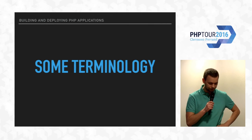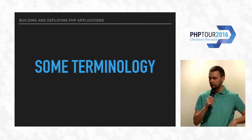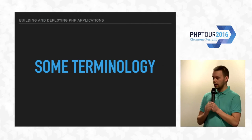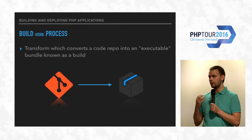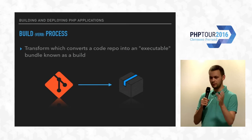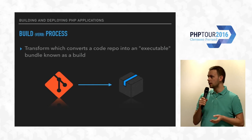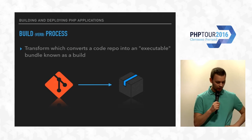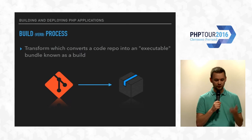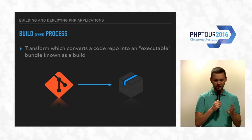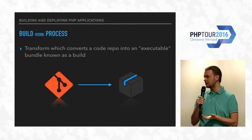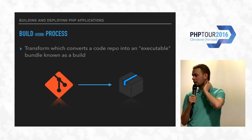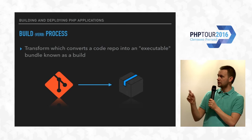Before we go further, I would like to define some terminology that I will use so that we are all on the same page. So 'build' as a verb — the build process — it's kind of an action. What I mean when I say build or build process is basically a process of transforming or converting some source code into something. The key thing is that it is a process, so it can be automated. I'll mention some tools you can use to automate things in further slides.